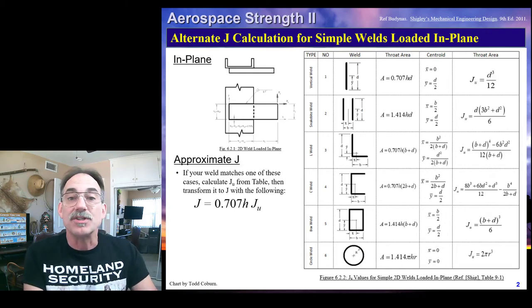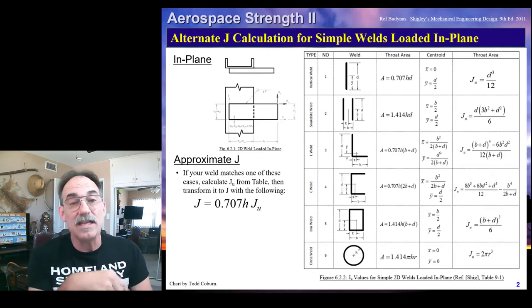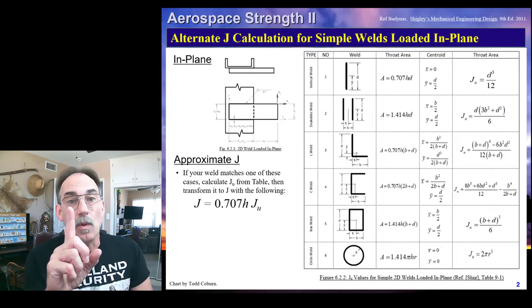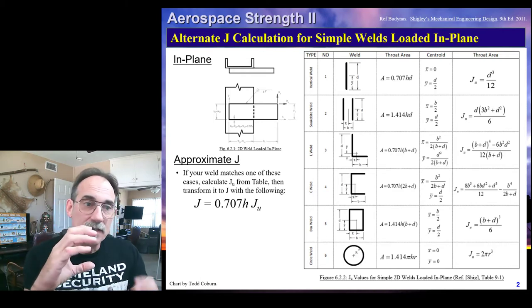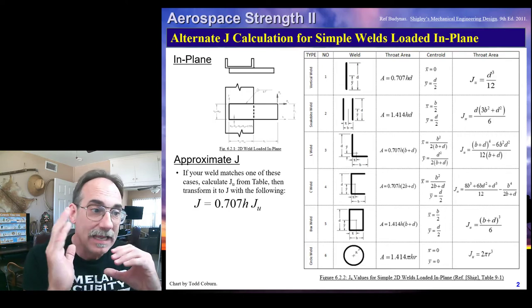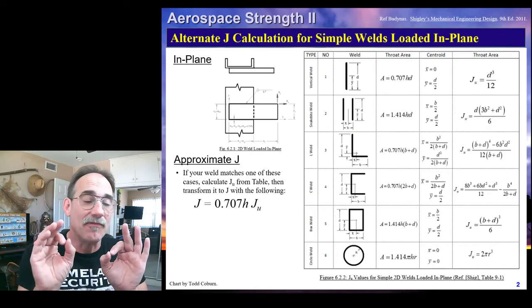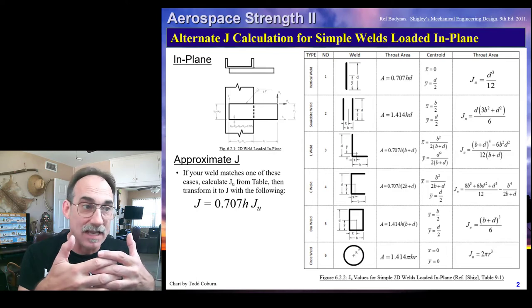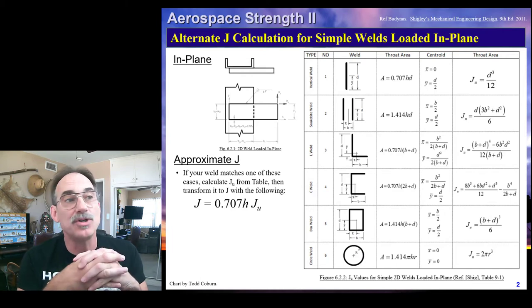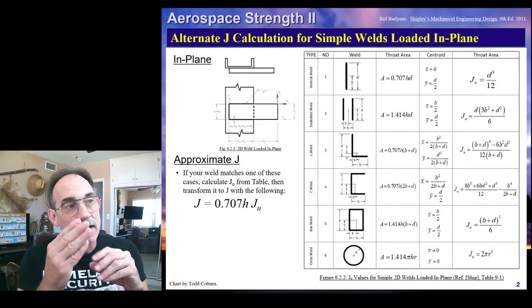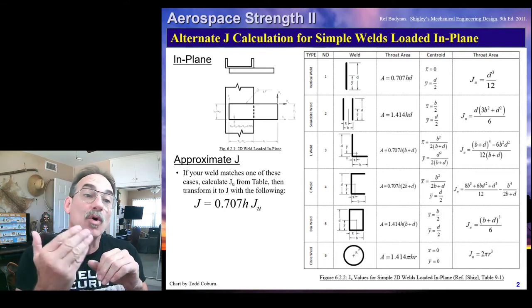However, if we have a weld that falls in the category of what we might call a simplified weld - if it looks like one of these welds here - a vertical weld, a snakebite weld, an L weld, a C weld, a box weld, or a circle weld. Any of these types of welds can be handled by calculating a simplified procedure. Rather than filling out the entire table, we can just grab the J-U equation from the rightmost column here.